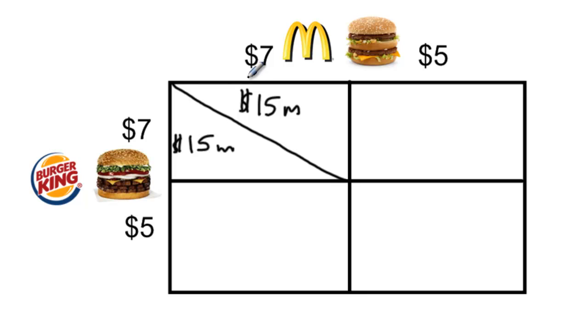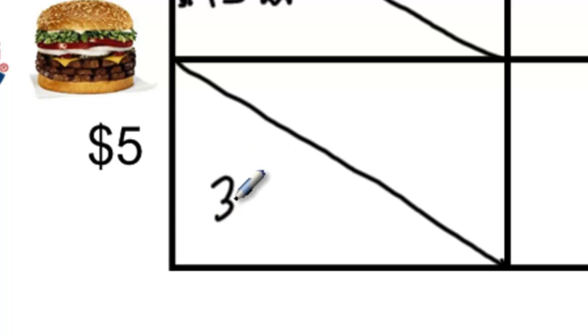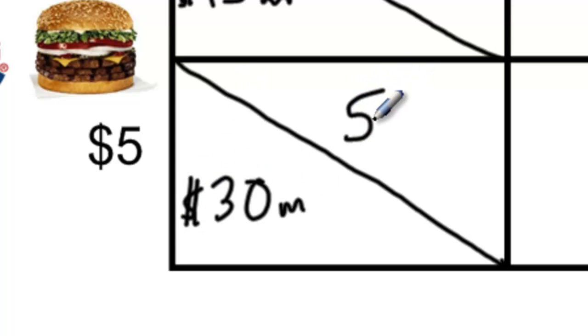What if Burger King were to lower its price to five dollars? Let's assume that Burger King unilaterally lowers its price to five dollars while McDonald's remains at seven dollars for its Big Mac meal. If the price of Whopper meals falls to five dollars, we can expect that Burger King will capture a much larger share of the total market, increasing its profits to thirty million dollars, while McDonald's profits will fall to five million dollars.